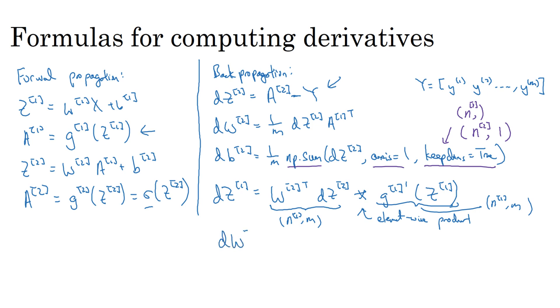Then finally, dw1 is equal to that. And db1 is equal to this. np.sum(dz1, axis=1, keepdims=True). So, whereas previously, the keepdims maybe matter less if n2 is equal to 1. So, this is just a 1 by 1 thing. It's just a real number.